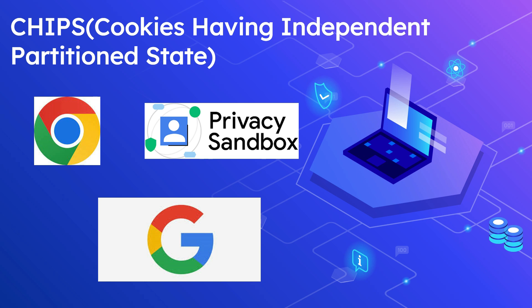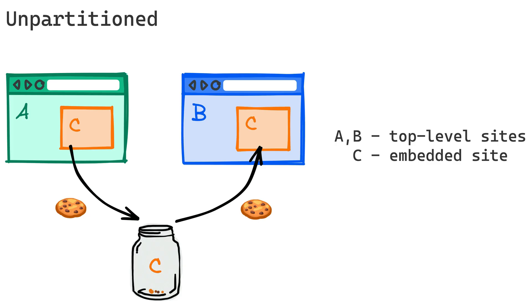Without partitioning, third-party cookies can track users across multiple unrelated top-level sites. This practice is known as cross-site tracking. Browsers are moving away from unpartitioned third-party cookies. CHIPS enables partitioned third-party cookies accessible only within the top-level context.